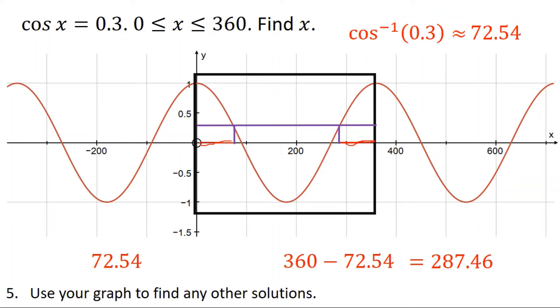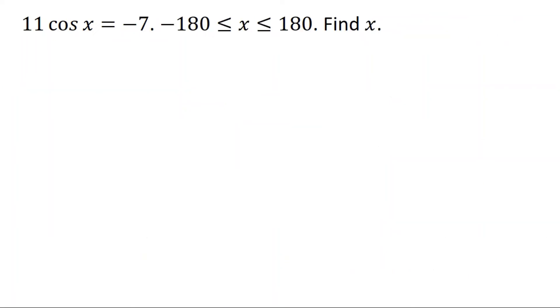Let's see another example. If I've got 11 lots of cosine of x equals negative seven. That doesn't quite look like we want it to look. So before I do anything else, I'm going to divide both sides by 11 so that it looks more like the kind of question I'm used to. Cosine of x is negative seven elevenths. And I can see the x is between negative 180 and 180, and it wants me to find x.